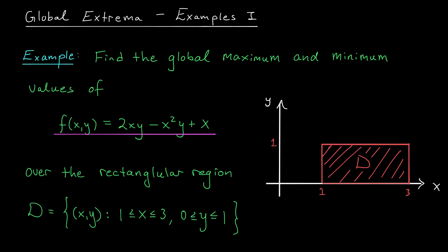We're doing so over this region here, this rectangular region D, described by all points (x,y) where x ranges between 1 and 3, and y ranges between 0 and 1. The graph of our function f(x,y) is some curved surface living above this region, and we want to know the largest and smallest values it attains.